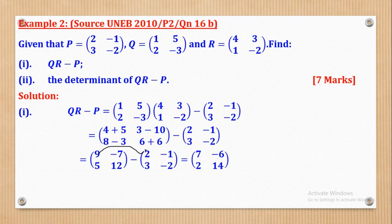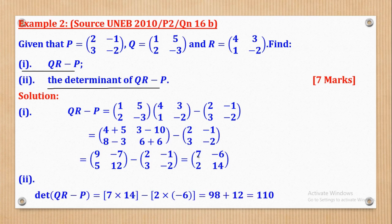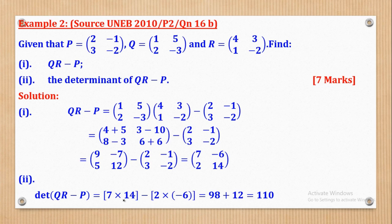Subtracting Matrix P from the result: 9 minus 2 gives 7; negative 7 minus negative 1 gives negative 6; 5 minus 3 gives 2; and 12 minus negative 2 gives positive 14. So the matrix 2R minus P is [7, -6; 2, 14]. For part (ii), the Determinant of 2R minus P equals 7 times 14 minus 2 times negative 6.